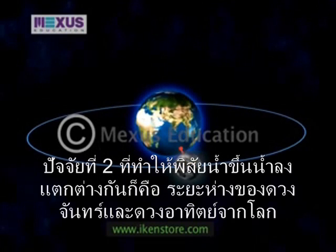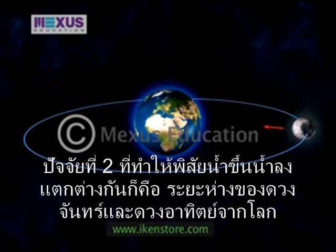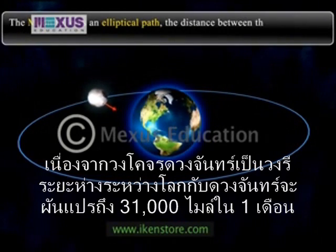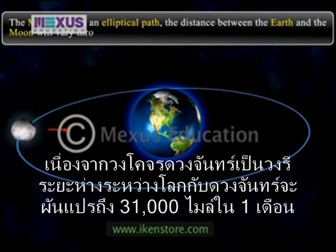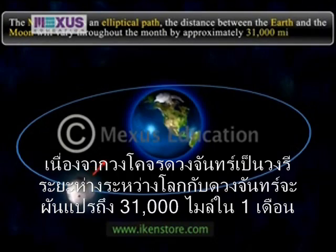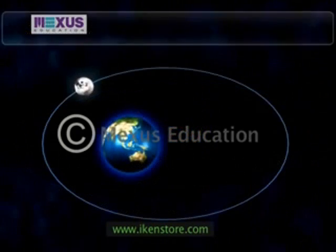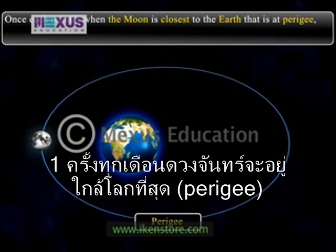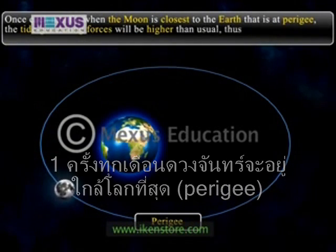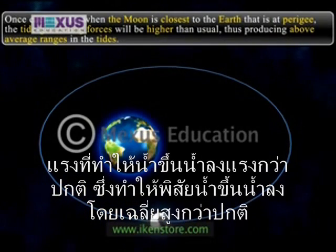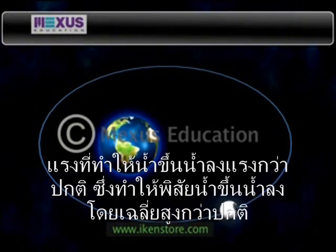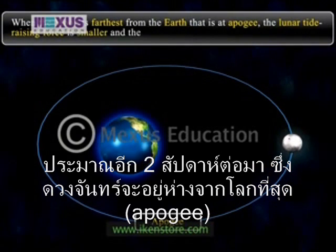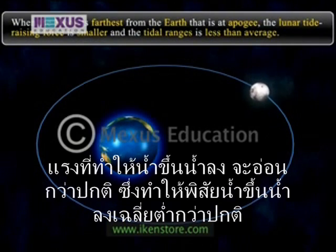The second factor on which the range of the tide depends is the distance of the Earth from the moon and the sun. Since the moon follows an elliptical path, the distance between the Earth and the moon varies throughout the month by approximately 31,000 miles. Once each month, when the moon is closest to the Earth — that is, at perigee — the tide generation forces are higher than usual, producing above-average ranges in the tides. Approximately two weeks later, when the moon is farthest from the Earth — that is, at apogee — the lunar tide-raising force is smaller and the tidal ranges will be less than average.